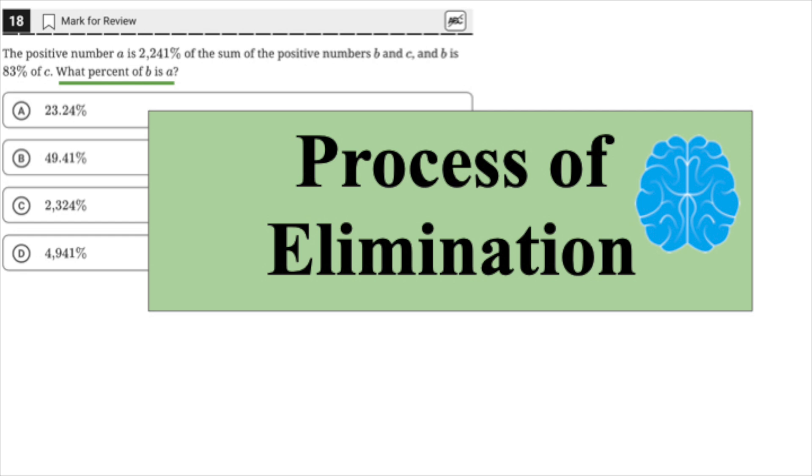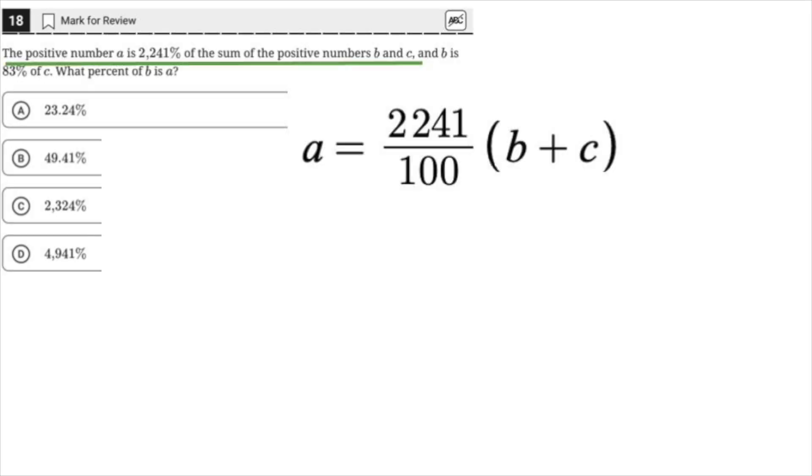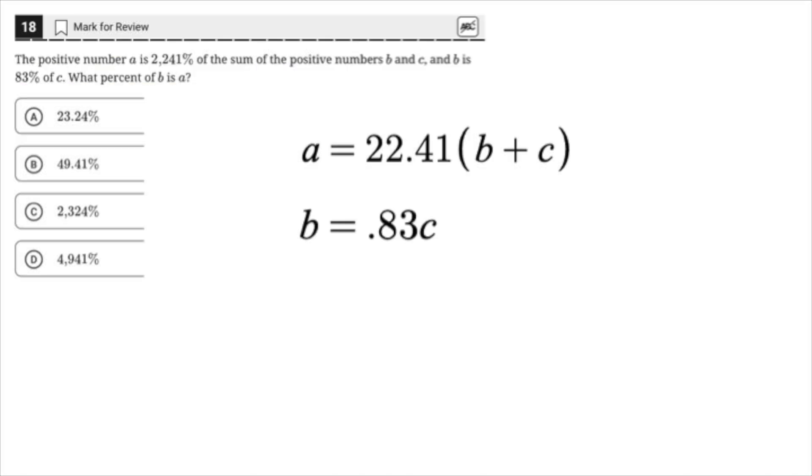Alternately, you could use process of elimination to solve. If A is 2,241% of the sum of the positive numbers B and C, and B is 83% of C, that means B is smaller than C, but it is relatively close to being 100% of C.